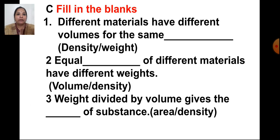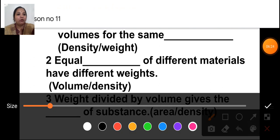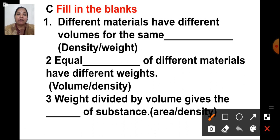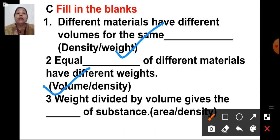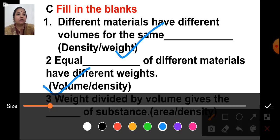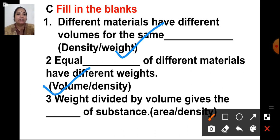Moving on to the next question: fill in the blanks. Different materials have different volumes for the same — options: density and weight. The answer is weight. Equal blank of different materials have different weights — options: volume and density. The answer is volume. Weight divided by volume gives the blank of a substance — the answer is density. We have discussed that density equals weight upon volume.